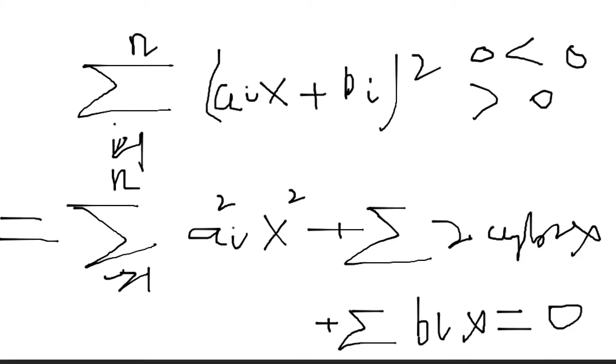Then we can get b squared minus 4ac, right? b squared. Let's take this 2 out. So it's 4 squared, and then this is a_i squared and b_i squared, minus a_i squared times summation of b_i x squared. So this is less than 0.